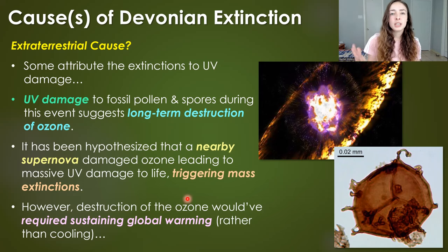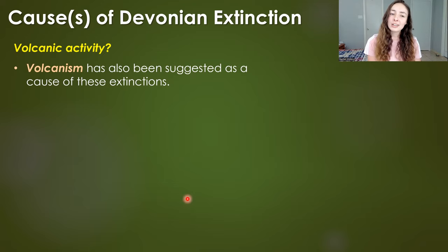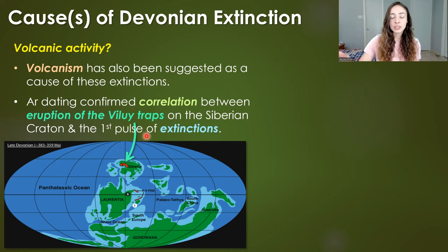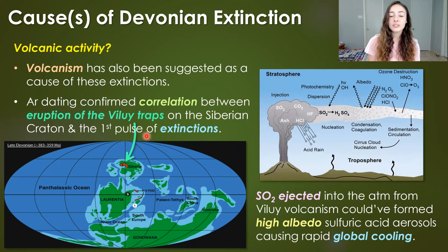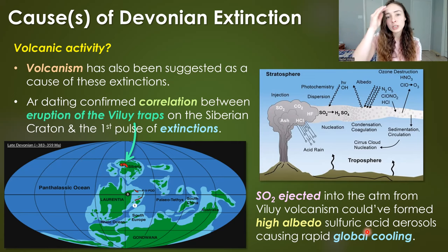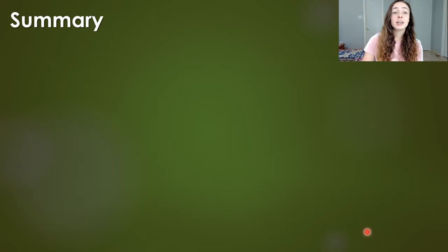Another proposed contributing cause is volcanism. Dating has confirmed a correlation in timing between the eruption of the Viluy Traps in Siberia and the first pulse of late Devonian extinctions. If these eruptions were strong enough, SO2 or sulfur dioxide ejected high into the atmosphere could have formed high-albedo sulfuric acid aerosols that reflect and block a lot of sunlight, causing or contributing to the global cooling during this time.